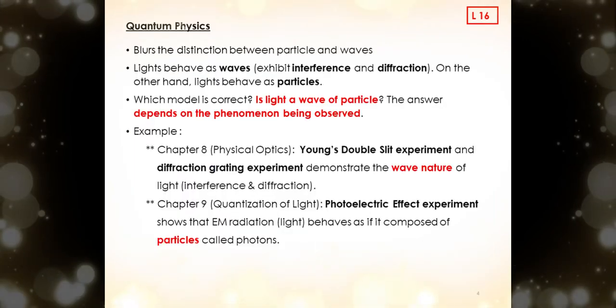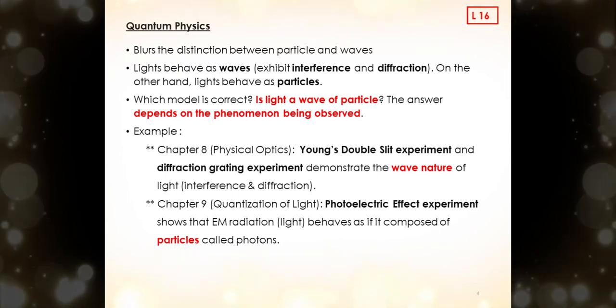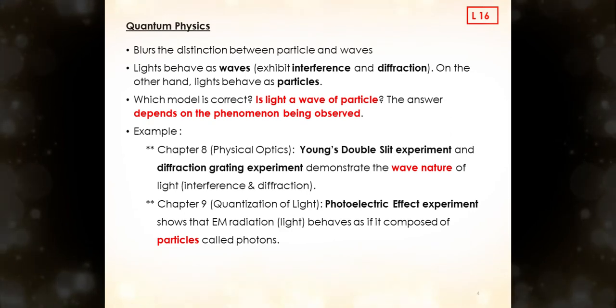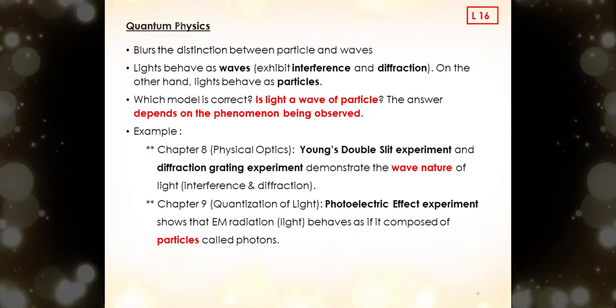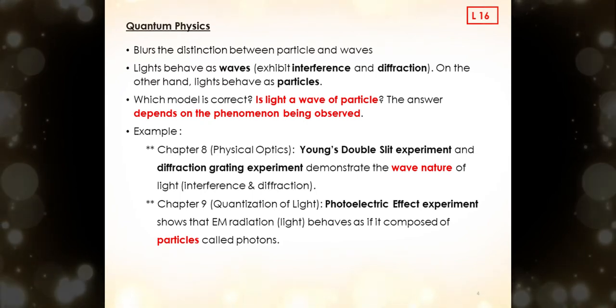Years later, in quantum physics, scientists found that there are blurs in distinction between particle and waves, where lights that travel as photons can act as waves with wave properties. So which model is correct? Is the light a wave or a particle? The answer is it depends on the phenomenon being observed. For example, in chapter 8, the evidence has shown that light has wave nature, where we can see interference and diffraction phenomenon in Young's double slit experiment and diffraction grating experiment. However, in chapter 9, from photoelectric experiment, we look at light acting as a particle. The photoelectric effect tells us photons are quantized. They travel in discrete units.